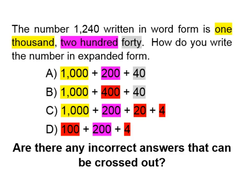Let's look at C. We've highlighted one thousand — yes, that's correct. Two hundred is in pink — that's correct. But we have twenty, and our number doesn't have a twenty in it, so we'll highlight that in red. And also it doesn't have a four, so we'll highlight that in red as well. Looking at D — D starts off with one hundred, but our number starts off with one thousand, so we highlight one hundred in red because that's wrong. It does have two hundred, but it also says four, which is incorrect — highlighted in red as well.